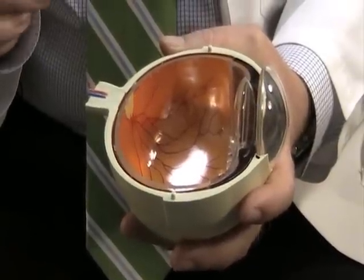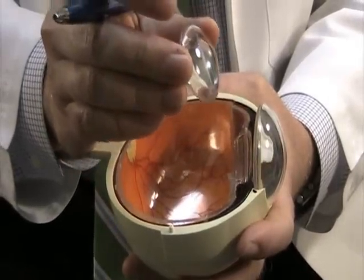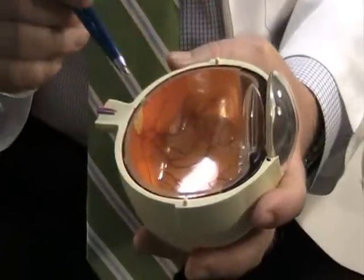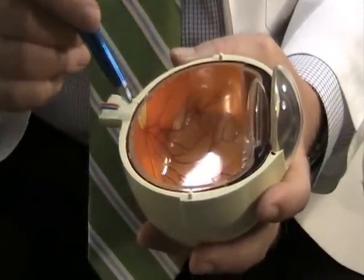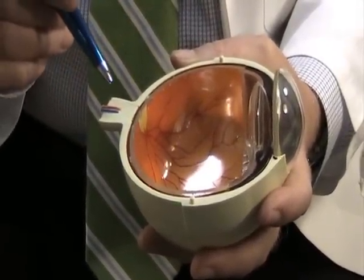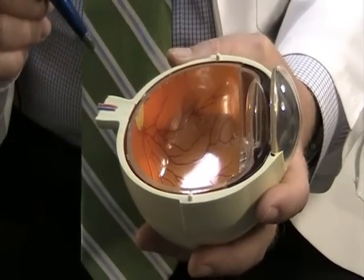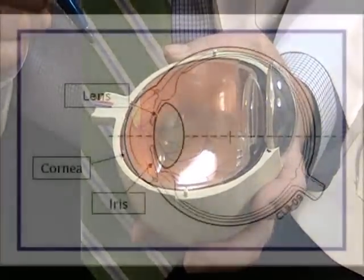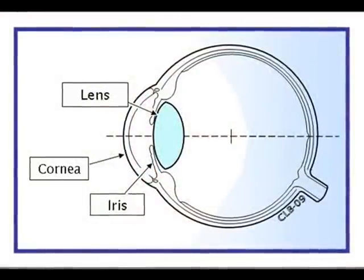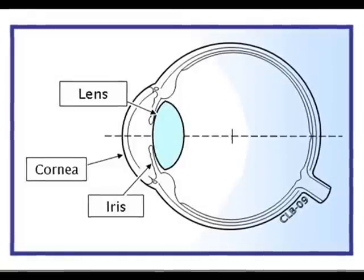So the things we're going to talk about are cataract as it relates to clouding of the lens, macular degeneration relating to deterioration of the retina, and glaucoma as it relates to damage to the optic nerve. In this segment, we are going to talk about cataract.